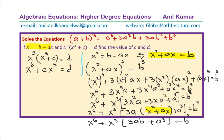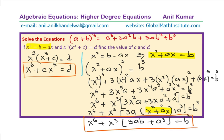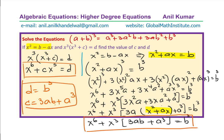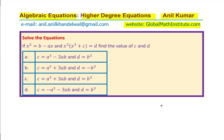Now if we compare this equation with the earlier one — x to the power of 6 plus c·x cubed equals d — by comparison we find that d equals b cubed and c equals 3ab plus a cubed. That becomes our solution. Looking at the multiple choices, this corresponds to choice C.